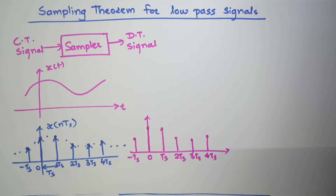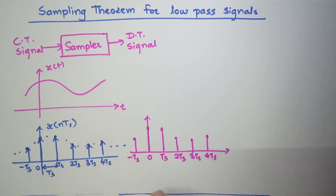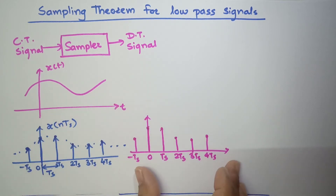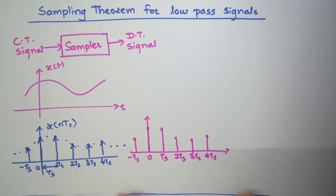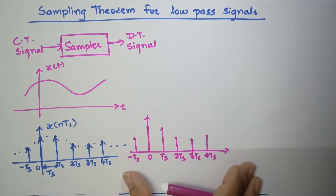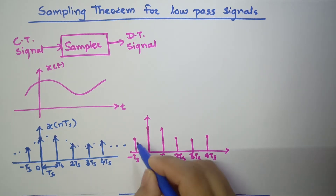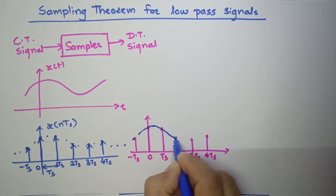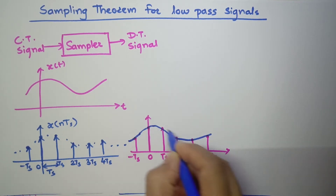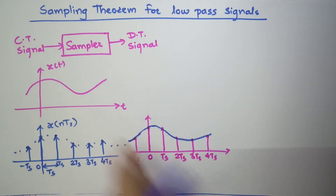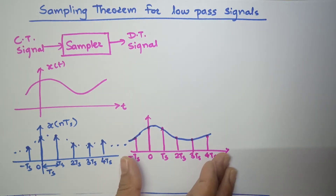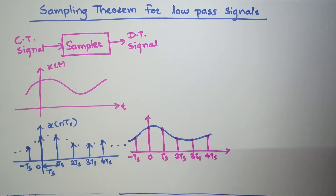What are the basic requirements that should be fulfilled in case of sampling? First, the sampled version should represent the original signal very faithfully. The second requirement is we should be able to reconstruct the original signal from the sampled version. If you connect these points, you can see this is the same as the original continuous time signal — we are able to get back this continuous time signal.